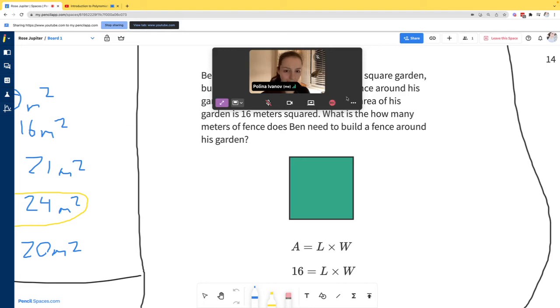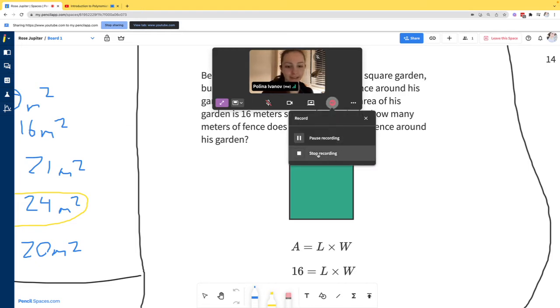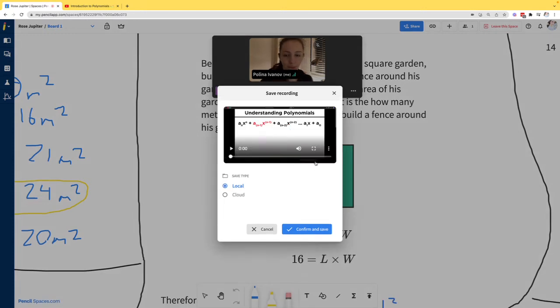If you want to end the recording, just click the recording button again and click stop recording. Once you click stop recording, the entire recording will end and you'll see a different pop-up that says save recording, with a preview of your recording as well as some options on where you want to save it.